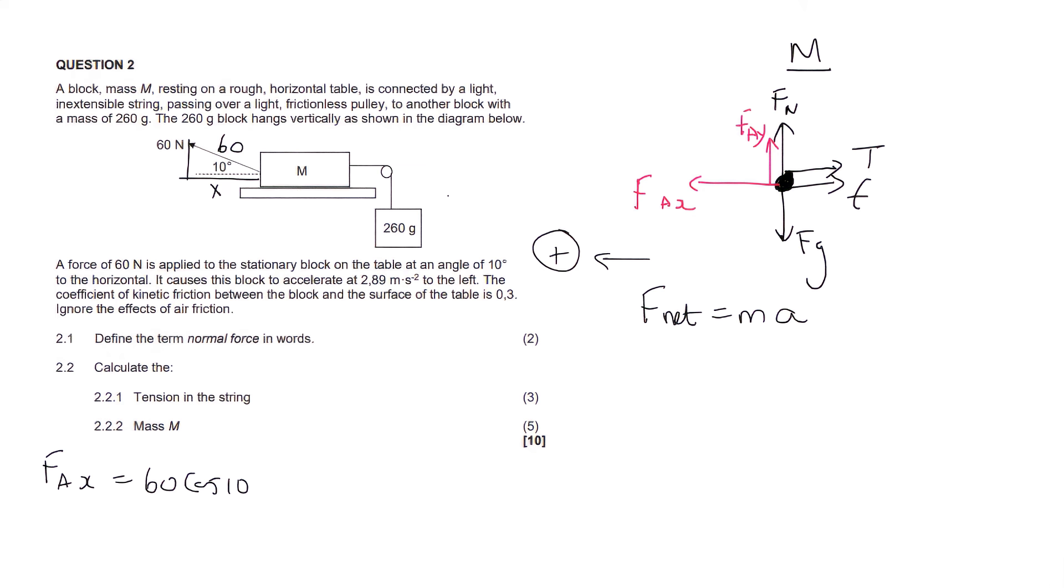So we just say 60 cos 10. That's the applied force in the horizontal direction. Right, now the tension force, we already worked that out in the previous question. And what we said was 3.30 newtons. Now friction is, friction is always equal to the kinetic coefficient multiplied by the normal force. And they've given us the coefficient, but now the normal force is a bit interesting.